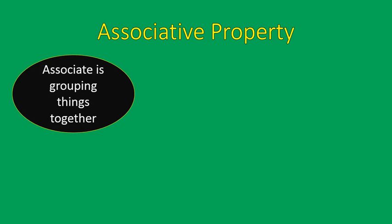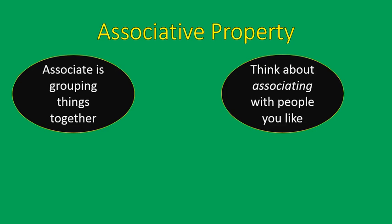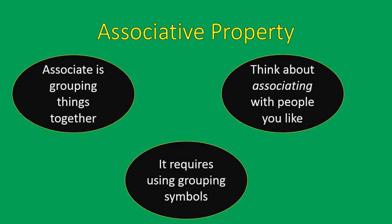Let's talk about the associative property of multiplication. Association is basically grouping things together, so it requires a grouping symbol. Think about people you associate with — they are people that maybe you like, you hang out with, you're together with them. So you're going to see these numbers grouped together using grouping symbols.